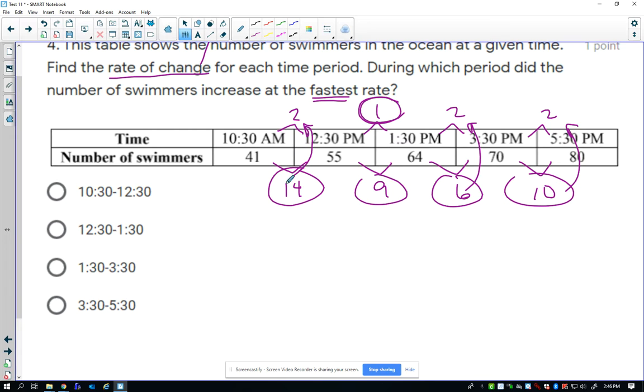So, the rate of change from 10:30 to 12:30 was actually 14 over 2 which is 7. This one is already 9 because it's already per one hour. This would be 6 swimmers in two hours is 3, and my last one, 10 swimmers in two hours is 5.